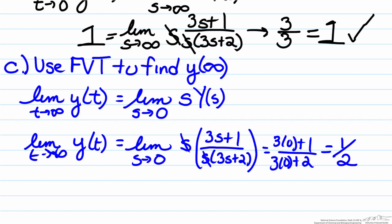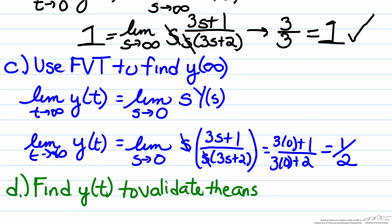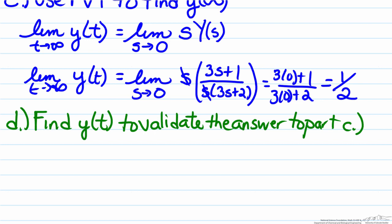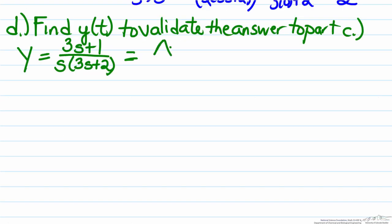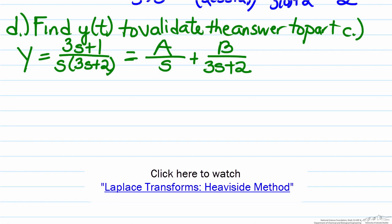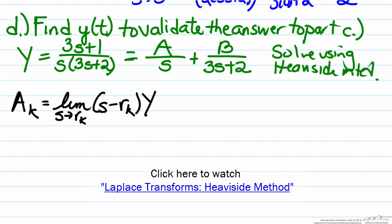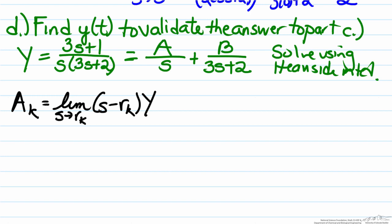For Part D we're asked to find y of t and to validate the answer to Part C, showing that the function converges to one half at steady state. To do this we start with our function. The roots have already been factored, so we can rewrite this as a over s plus b over 3s plus two, and we can solve this using partial fractions or the Heaviside method. Here we'll solve using the Heaviside method. We use this equation to determine a and b because both are non-repeating roots. We start by solving for a, which will be the limit as s approaches the root zero.